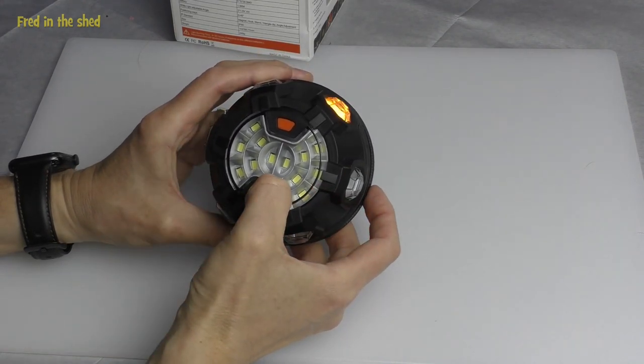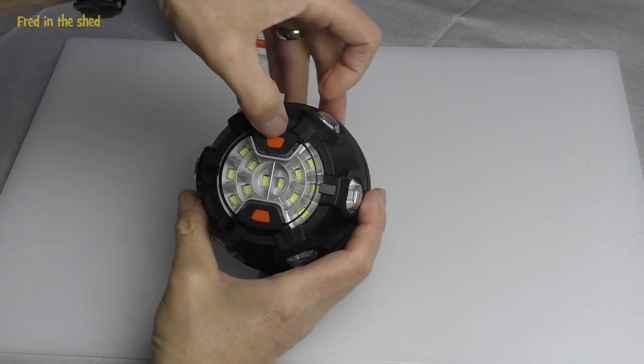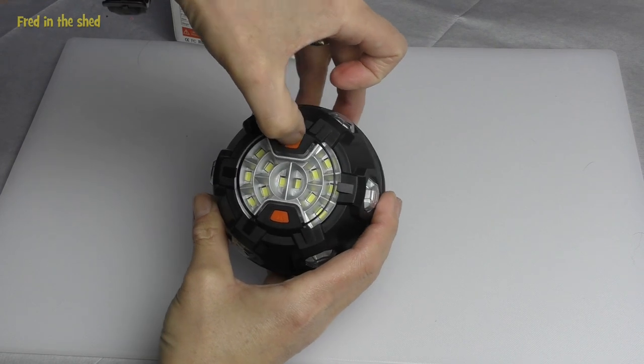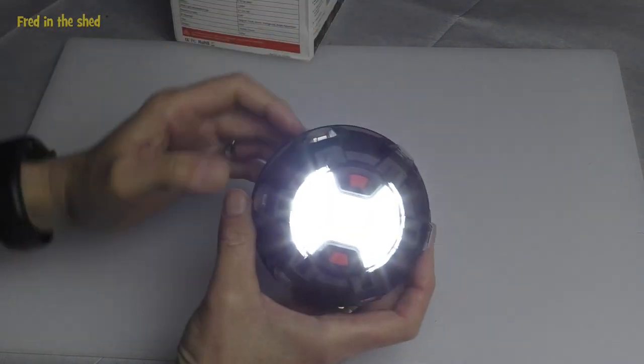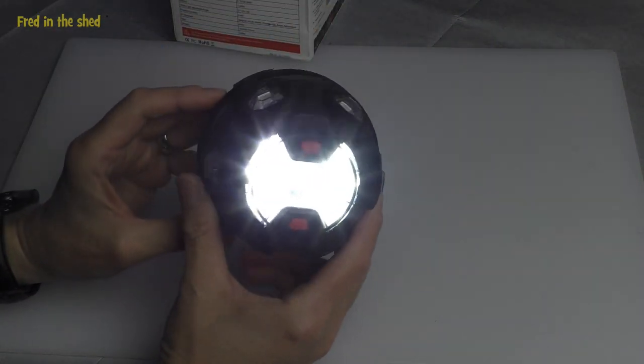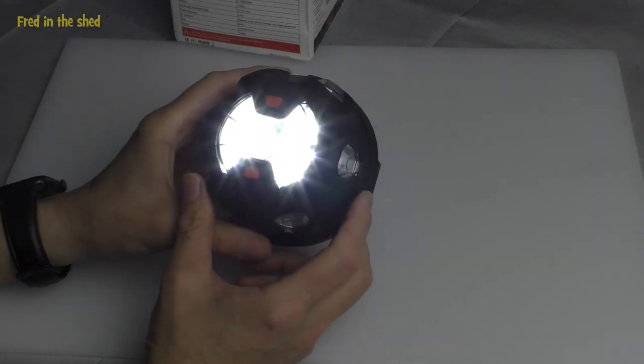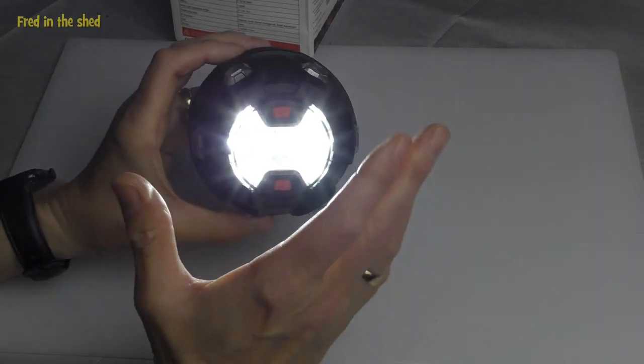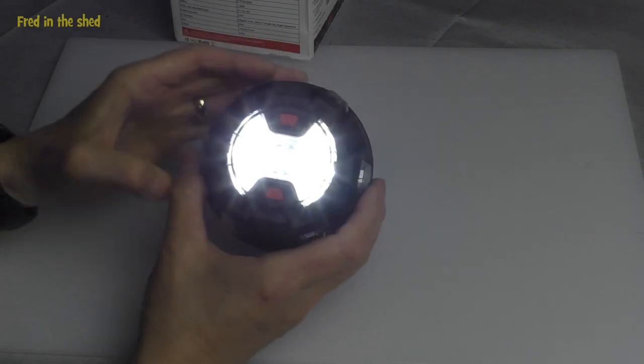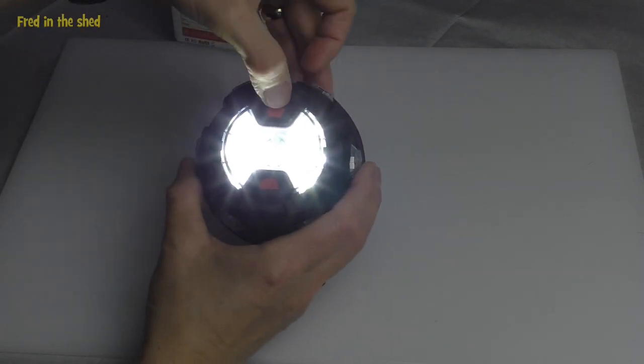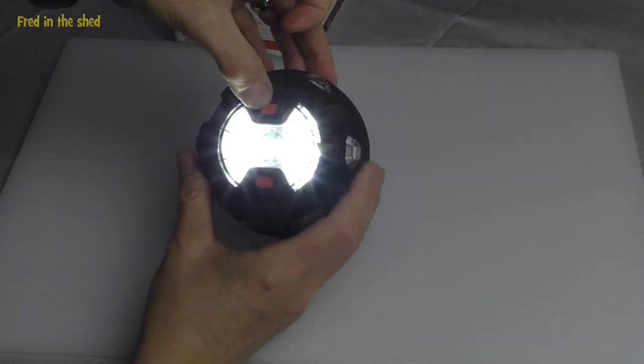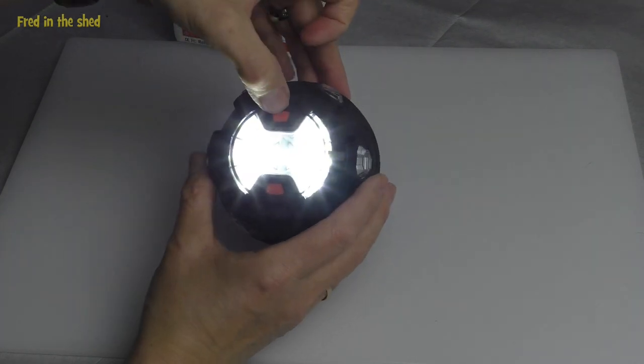So I'm just going to turn that off. And then the same thing now with the work light. Again, you've got to hold this down for three seconds. And on it comes. And that is super bright. Again, with the studio lights, I can't look at that. That is incredibly bright.